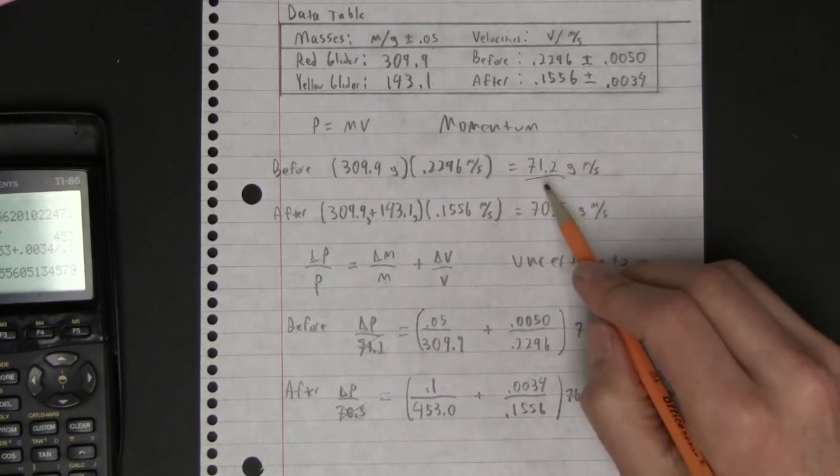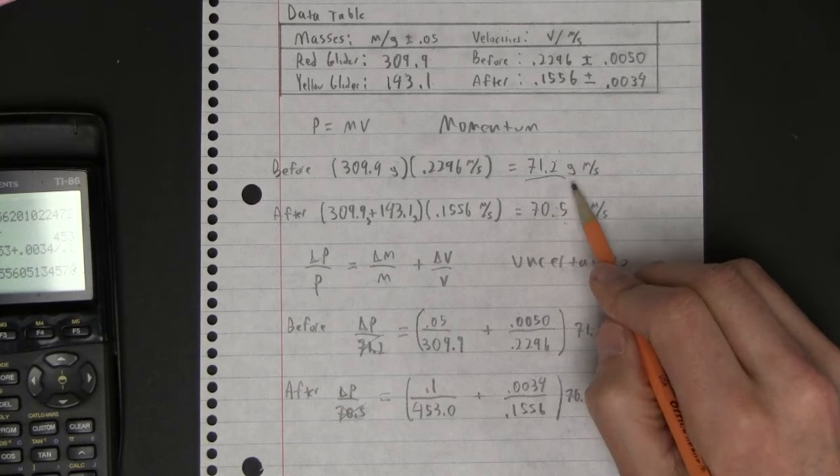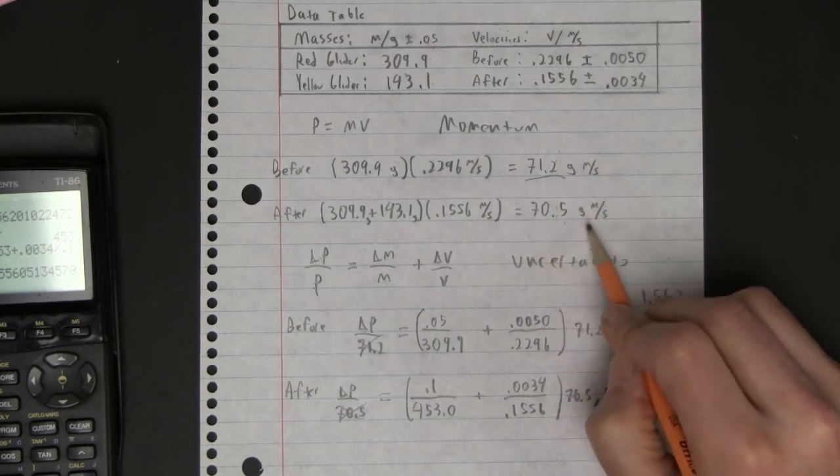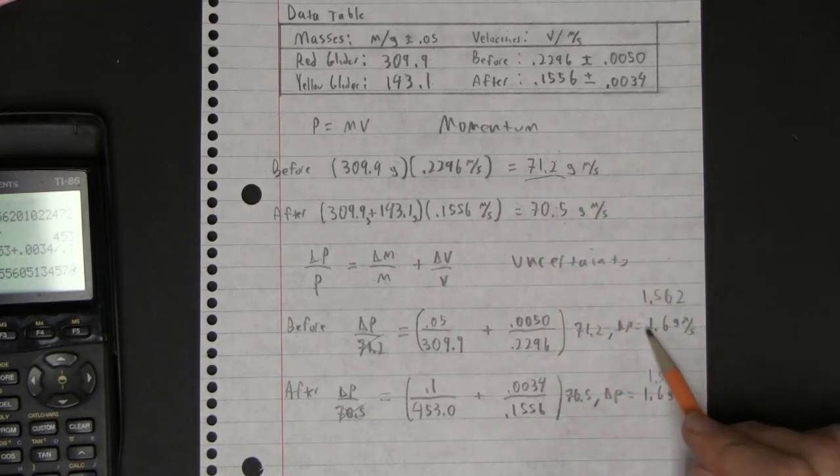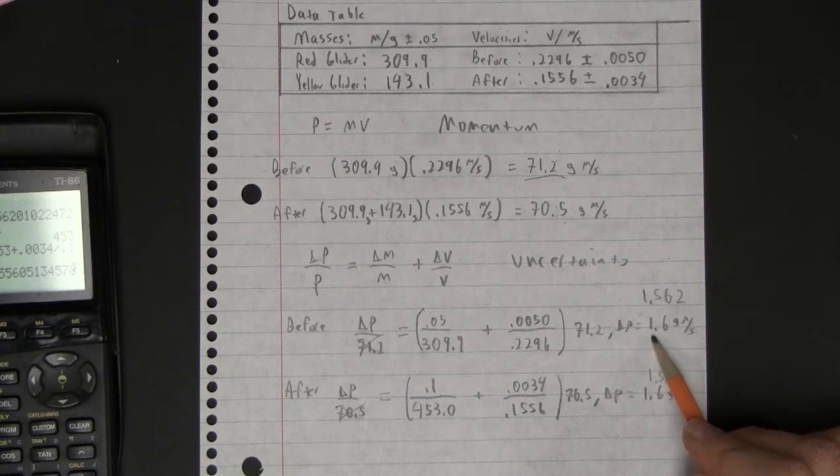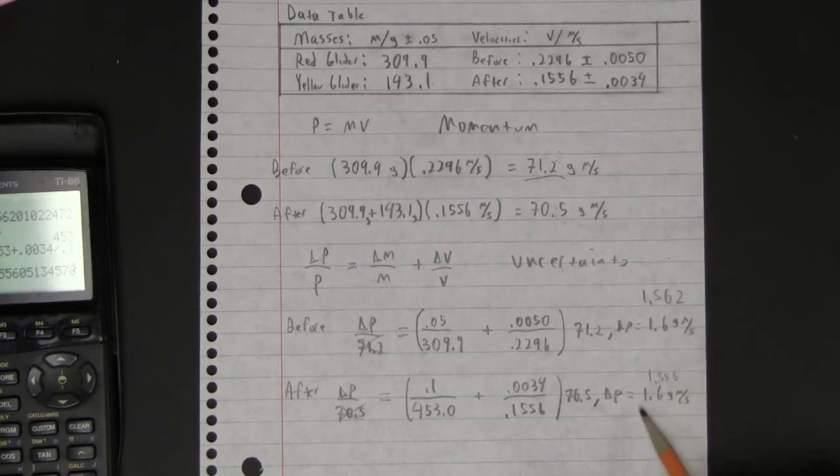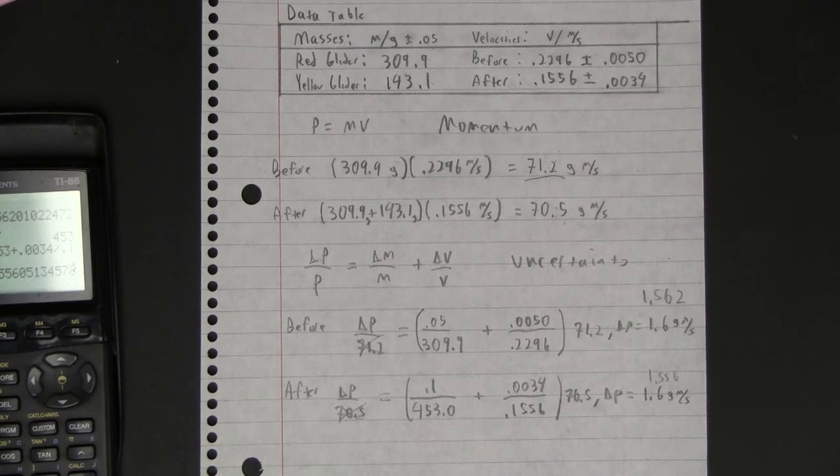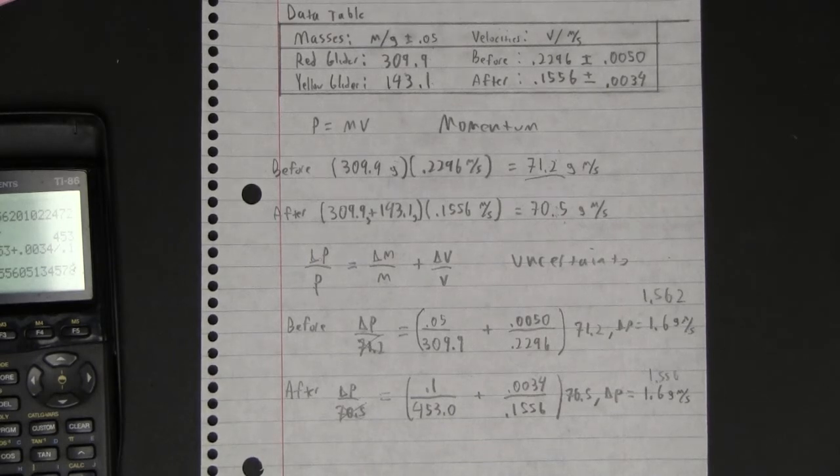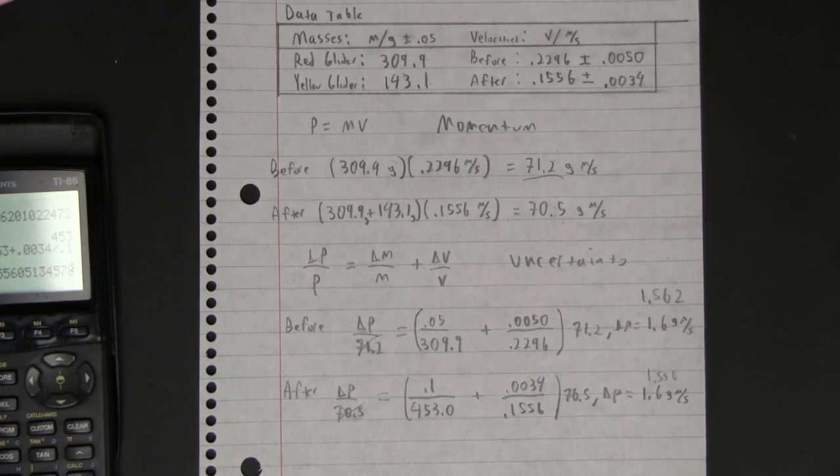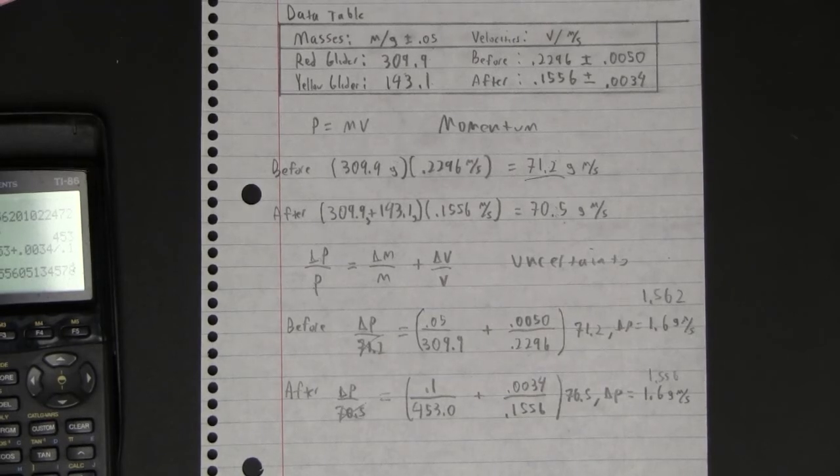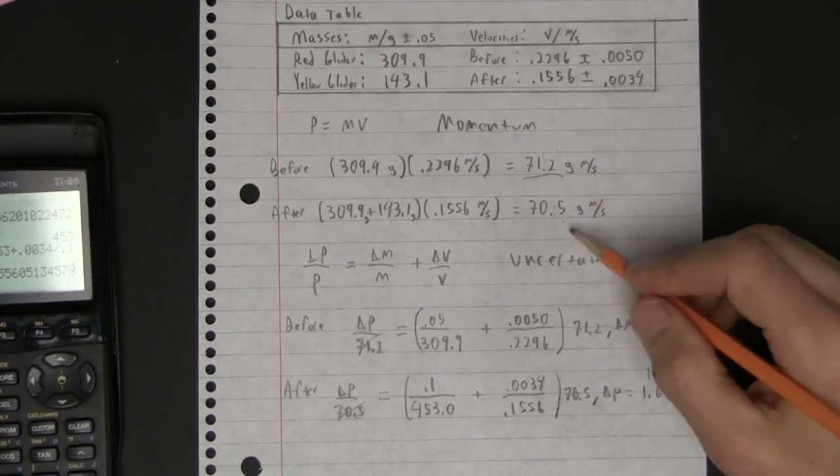You need to say the before momentum was 71.2 gram meters per second, after it was 70.5 gram meters per second. Given that the uncertainty before of 1.6 gram meters per second, and the uncertainty after of 1.6 gram meters per second, certainly this is enough uncertainty, a total of 3.2 gram meters per second. That would be enough uncertainty to cover the disparity between these things.